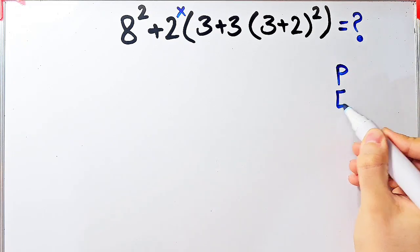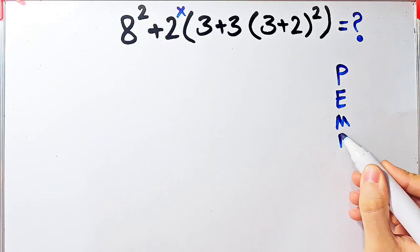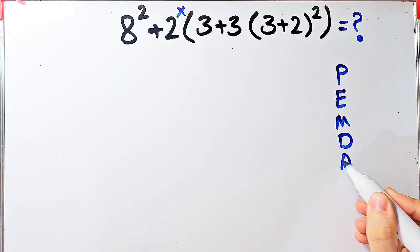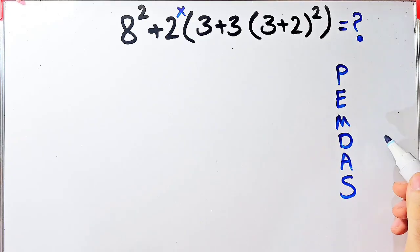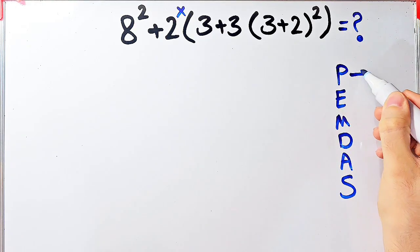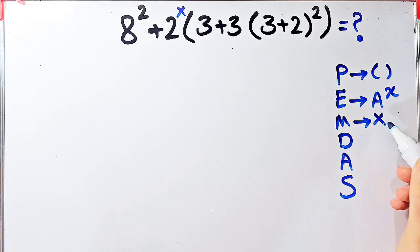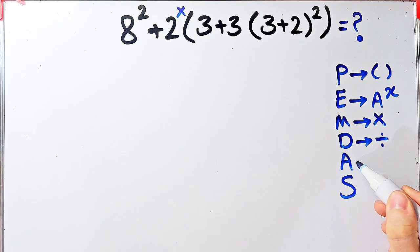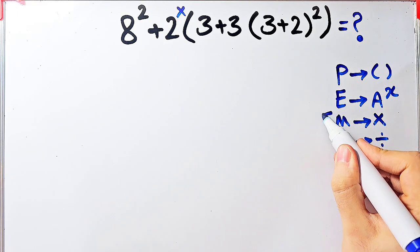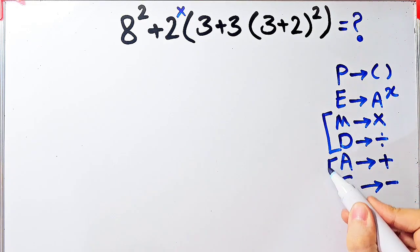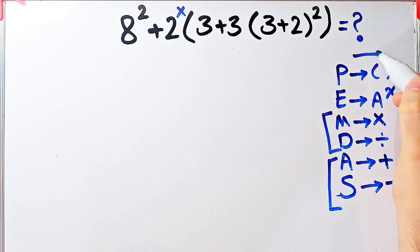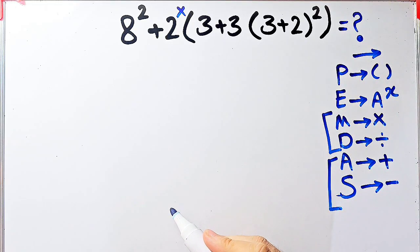PEMDAS shows the priority of mathematical operations, and if you don't pay attention to this rule you get the wrong answer. We must follow this rule from top to bottom. P stands for parentheses, E stands for exponent, M stands for multiplication, D stands for division, A stands for addition, and S stands for subtraction. Multiplication and division have the same level of priority; likewise, addition and subtraction have the same level of priority. When we have both in an expression, we start from the left and simplify.